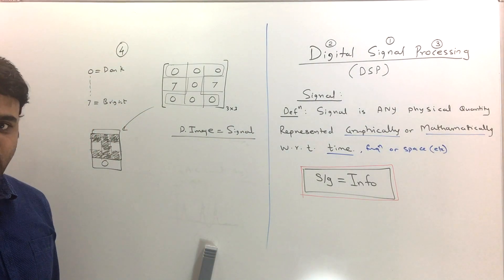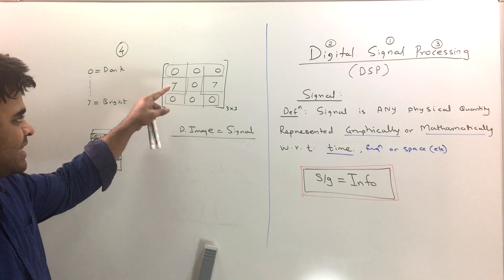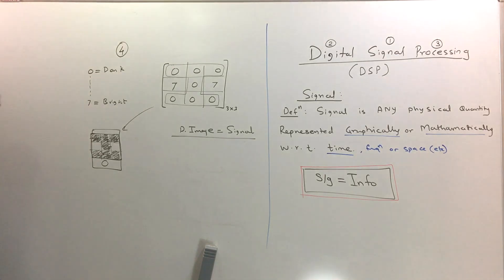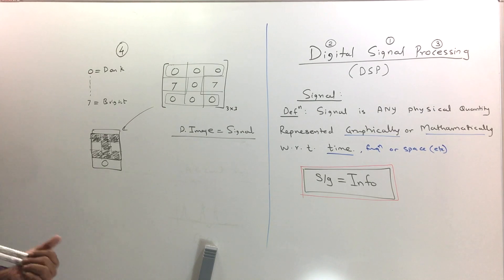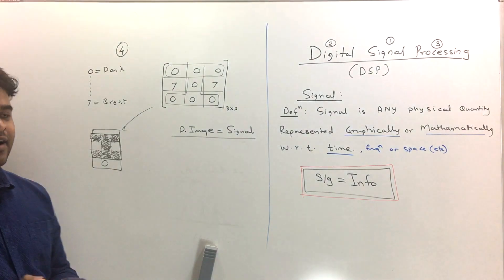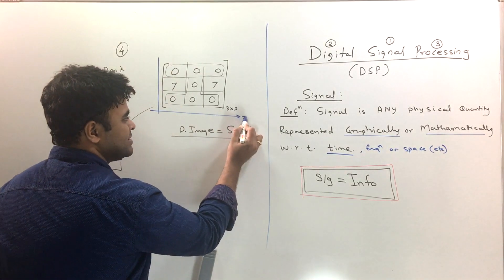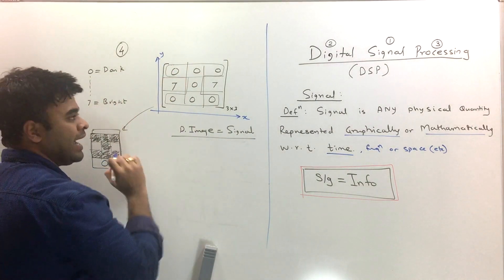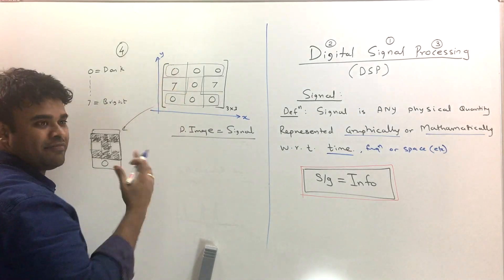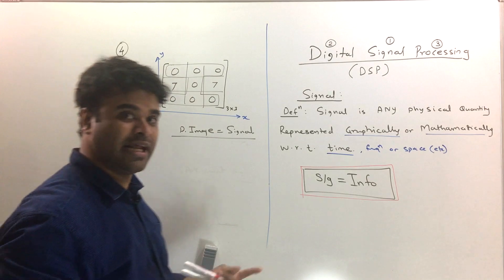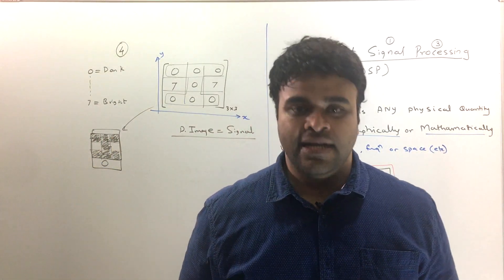This digital image is a signal because it carries information — you can read it as the letter 'I.' This is a completely different type of signal. If you treat the rows as x and columns as y, this is a function of x and y — it's a 2D spatial signal. So that image is a two-dimensional signal.